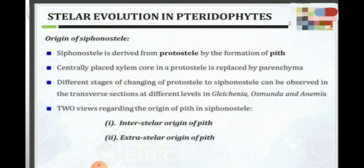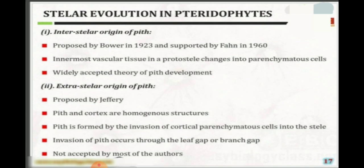There are two views regarding the origin of siphonostele. The first is the theory of interstelar origin of pith, proposed by Bower in 1923 and supported by Fan in 1996. This is the widely accepted theory of pith development, in which the innermost vascular tissue in a protostele changes into parenchymatous cells. The second theory was proposed by Jeffrey, according to which pith and cortex are homogeneous structures. Pith is formed by the invasion of cortical parenchymatous cells into the stele through the leaf gap or branch gap, but this theory is not accepted by most authors.